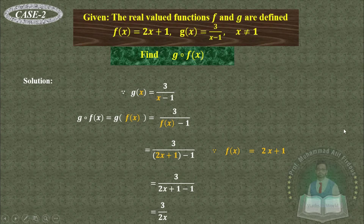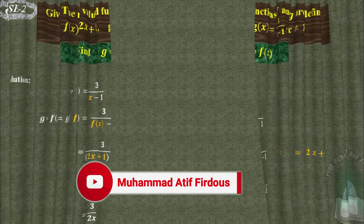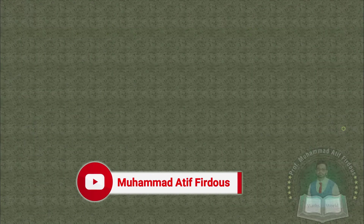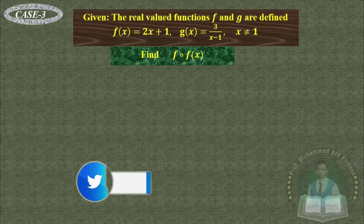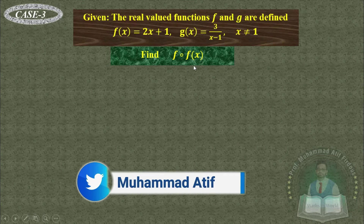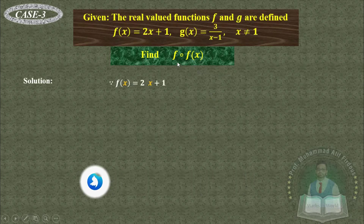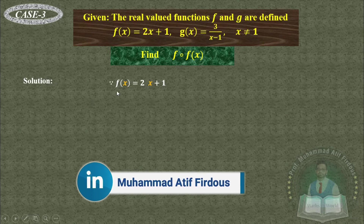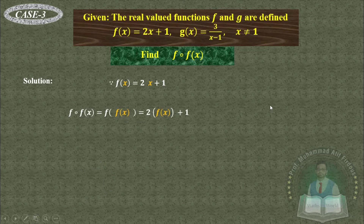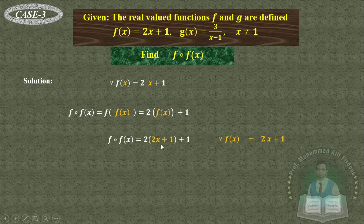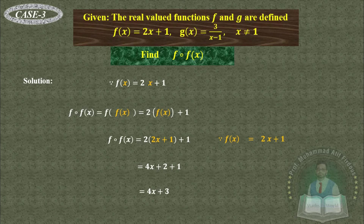Case 3: Find f(f(x)) using the same functions. The first function is f(x) = 2x + 1. Replace x by f(x) on both sides. Substituting f(x) = 2x + 1, we get 2(2x + 1) + 1 = 4x + 2 + 1 = 4x + 3.